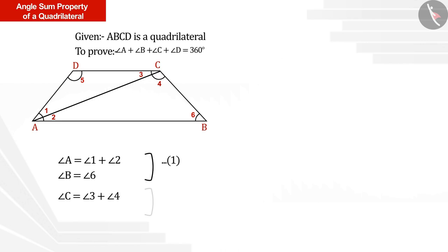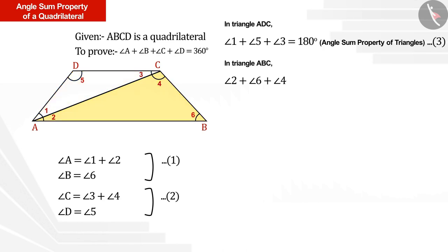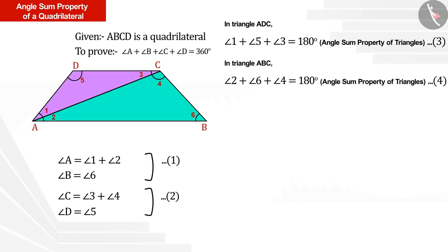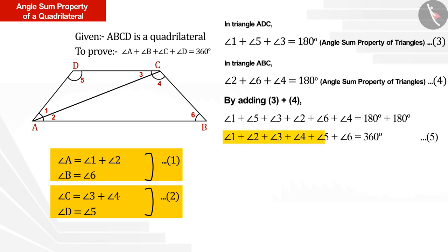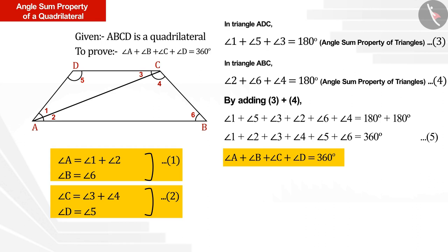Let us write the angles as follows. With the help of the triangle sum property, we can say that the sum of the angles of each triangle — triangle ADC and triangle ABC — will be 180 degrees. Because we have divided the quadrilateral into two triangles, the sum of the four angles of the quadrilateral equals the sum of the angles of the two triangles. So we add equations 3 and 4, from which we get the sum of all angles at 360 degrees. With the help of equations 1 and 2, we can write equation 5, and in this way we get 360 degrees as the sum of all four angles of the quadrilateral.